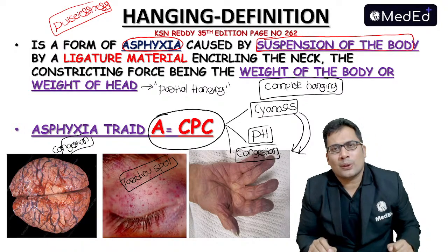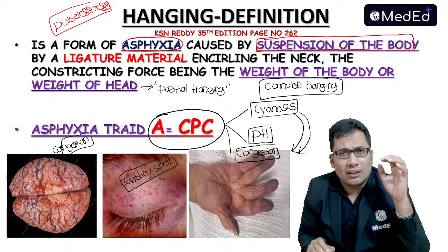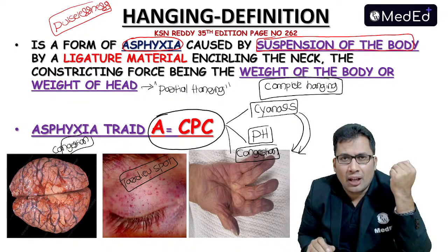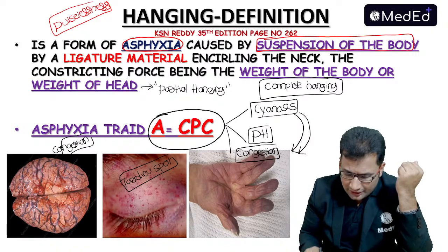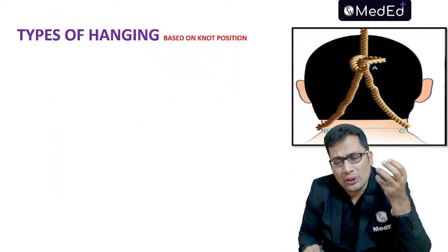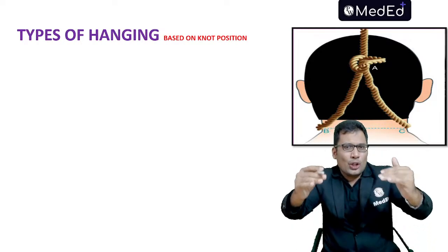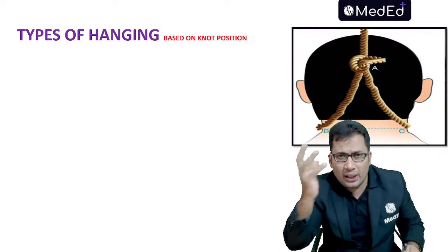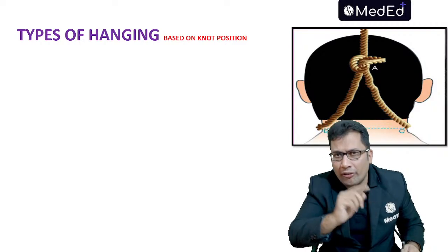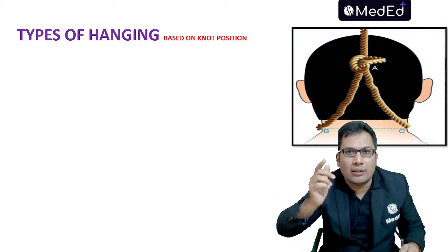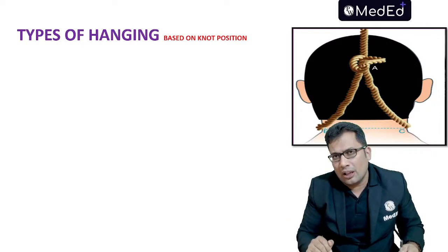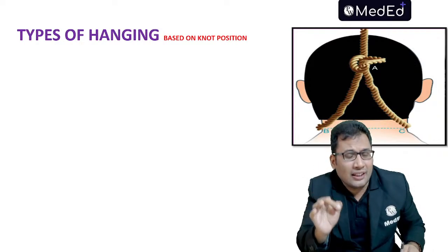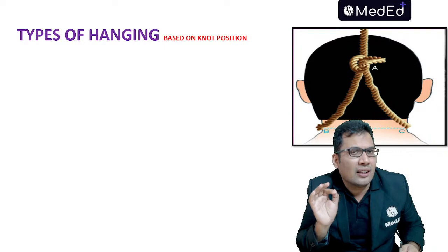Now let's see types of hanging. Depending upon suspension of the body, it can be complete or partial hanging. Based on knot position, hanging is classified into typical and atypical hanging. Typical hanging is where the knot is present at the nape of the neck or at the occiput. Atypical hanging is where the knot is present in any position other than the nape of the neck.